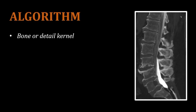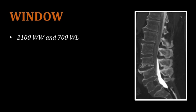For myelogram imaging, the appropriate algorithm is generally going to be bone or a special algorithm called the detail algorithm. The appropriate window width and window level can vary between institutions, but in many places we use values slightly different than routine spine imaging. We want slightly higher contrast, so the window width is 2100. And we want a slightly darker image to make the contrast especially apparent, so we would use a window level of 700.